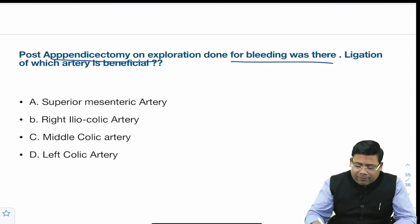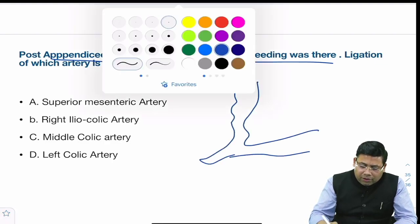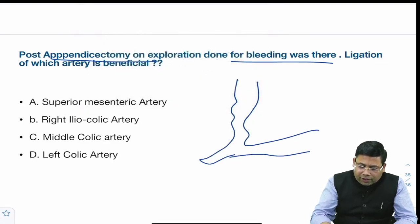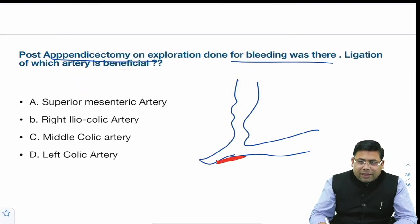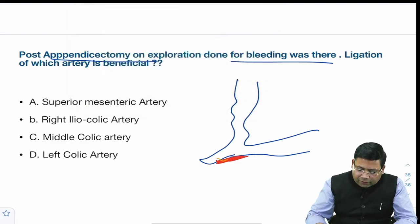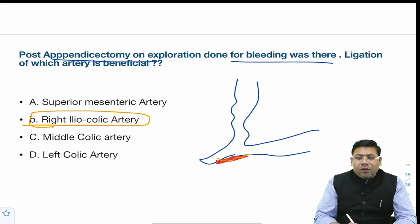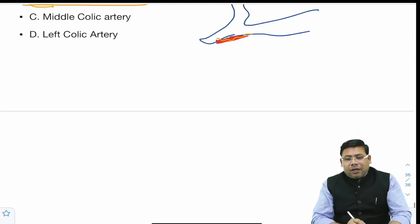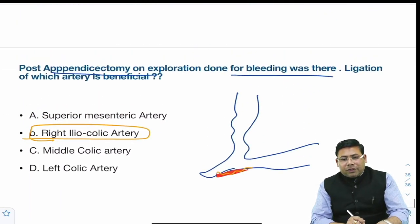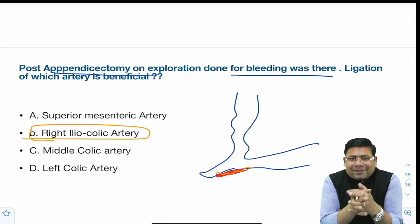There was a question on post-appendicectomy bleeding. During appendicectomy, the important vessel is the appendicular artery, which is a branch of the ileocolic artery — found in the mesentery of the appendix. So the vessel responsible for bleeding during appendicectomy is the appendicular artery, a branch of the ileocolic artery.